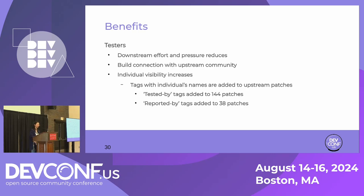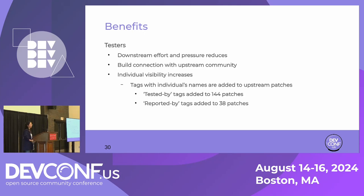For testers, fewer downstream bugs means the downstream testing effort and pressure reduce. Contributing testing to upstream also builds connections with the upstream community and helps us understand what is happening upstream, which is helpful for future work. Adding tags with individual names and emails to upstream patches increases individual visibility. In the last two years, our team of ten associates added tested-by tags to 144 patches and reported-by tags to 38 patches.